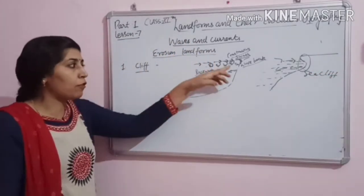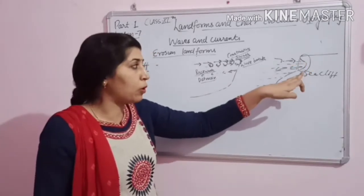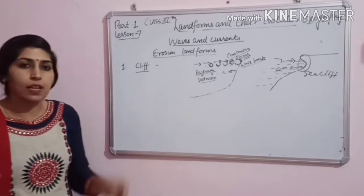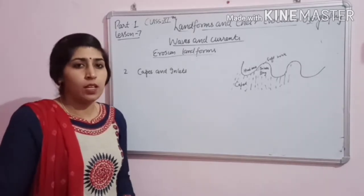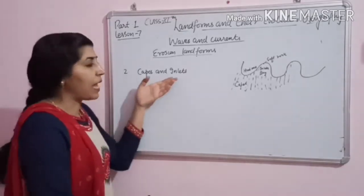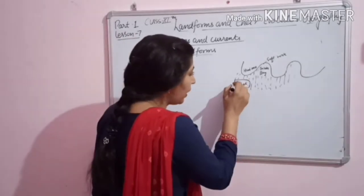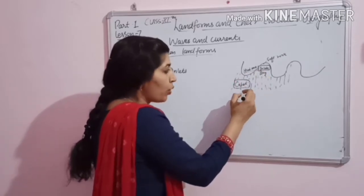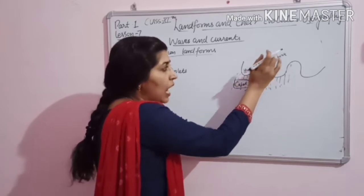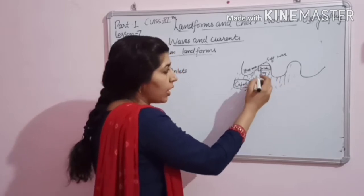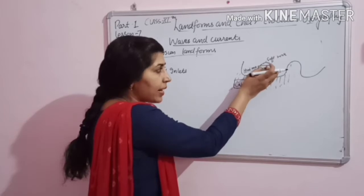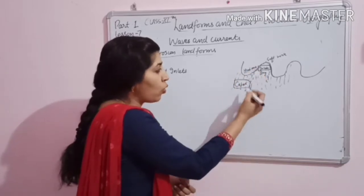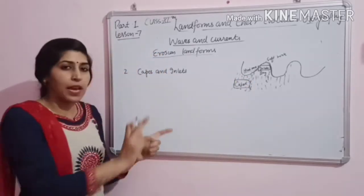The first structure is sea cliff — when wave action on the coastal area is very steep, it creates a cliff shape. This is the first structure made by sea waves. Next erosional landform made by the waves is caves and inlets. Where there is hard rock, erosion does not happen; but where there is soft rock, sea waves cause erosion, creating an inlet. Where hard rock remains, those form caves.